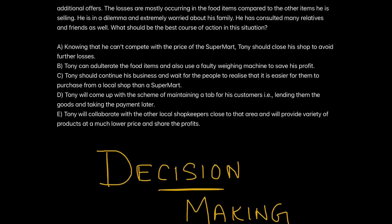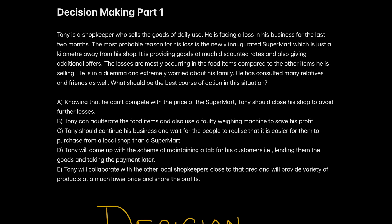Let's scroll up and see the example. Tony is a shopkeeper who sells goods of daily use. He is facing a loss in his business for the last two months. The most probable reason for his loss is the newly inaugurated supermart just a kilometer away from his shop, which is providing goods at much discounted rates and also giving additional offers. When you realize you've read half the information, try to figure out the problem and why it is happening before reading further.